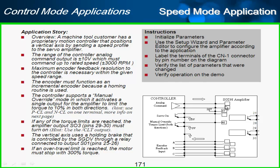The controller is sending plus or minus 10 volts to the amplifier, and the motor should have a speed range of plus to minus 3,000 rpm. The maximum encoder feedback resolution is necessary — that's the encoder feedback coming back from the Sigma 5 to the controller. The encoder is to function as an incremental encoder, as the controller is using a homing routine.